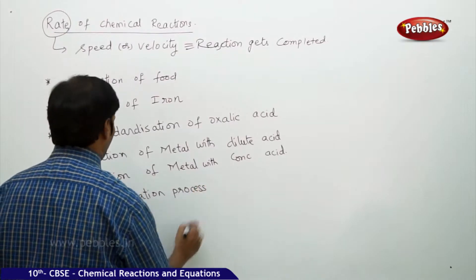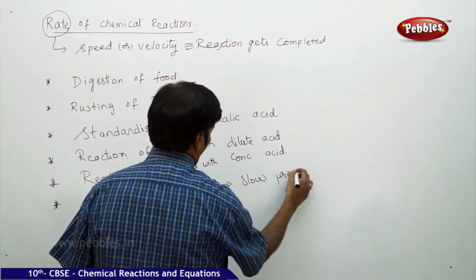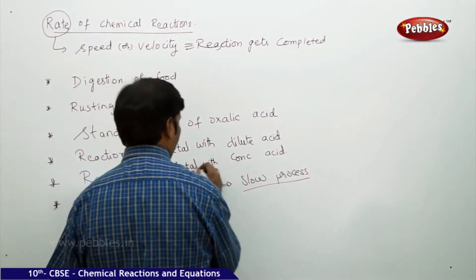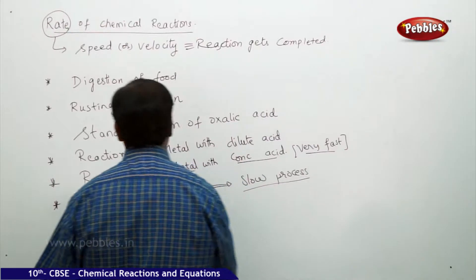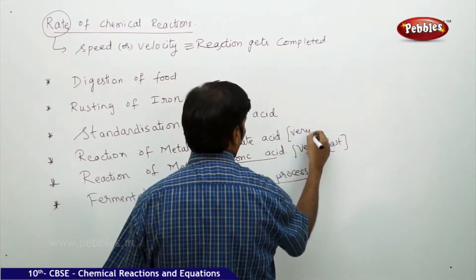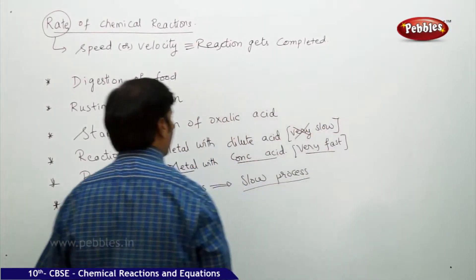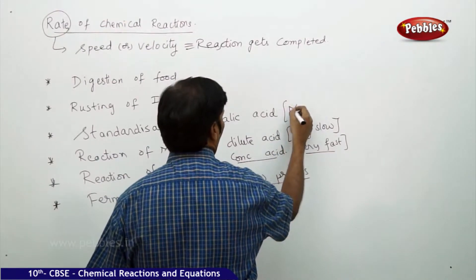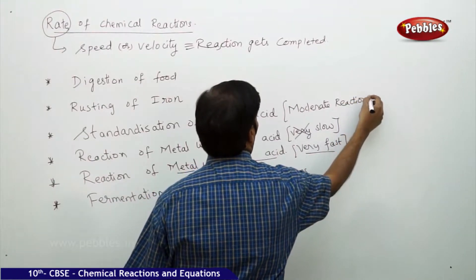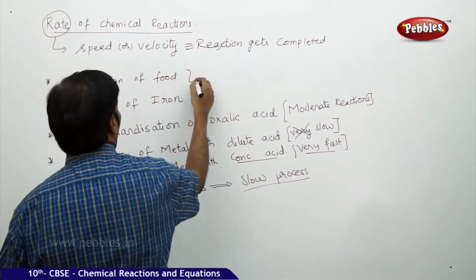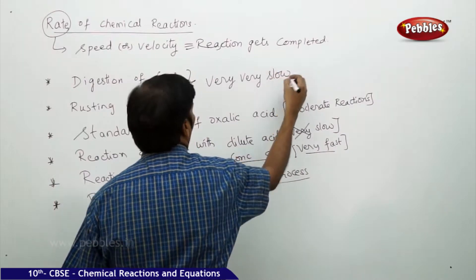What you are noticing in all these cases - fermentation process is a slow process, metal reacts with concentrated acid very fast, metals react with dilute acid very slow. Standardization of oxalic acid - moderate reactions. Rusting of iron and digestion of food - very slow reactions.